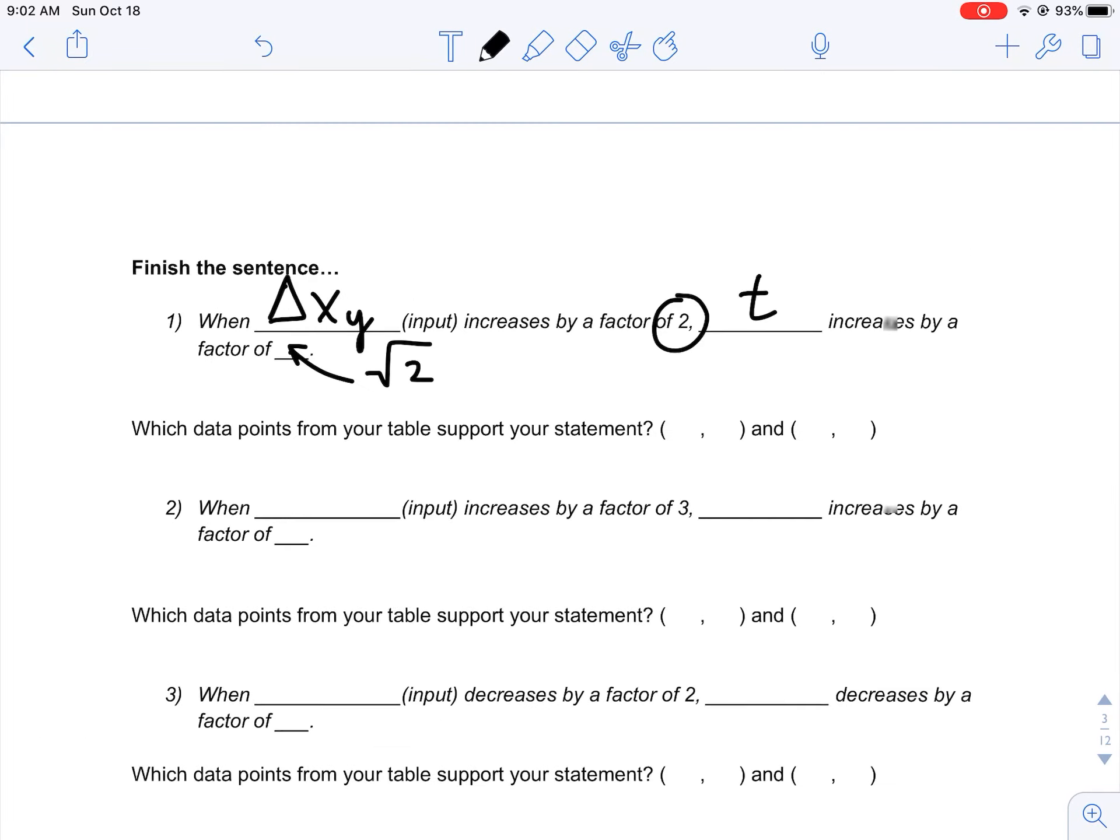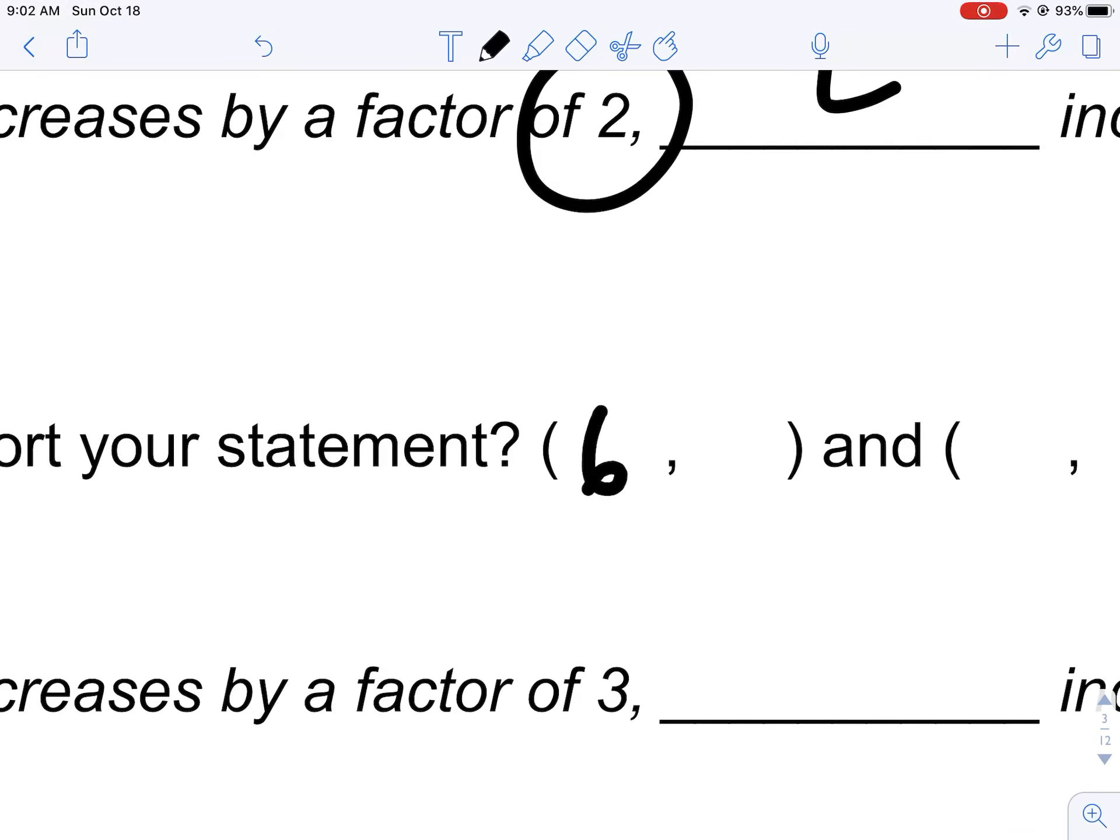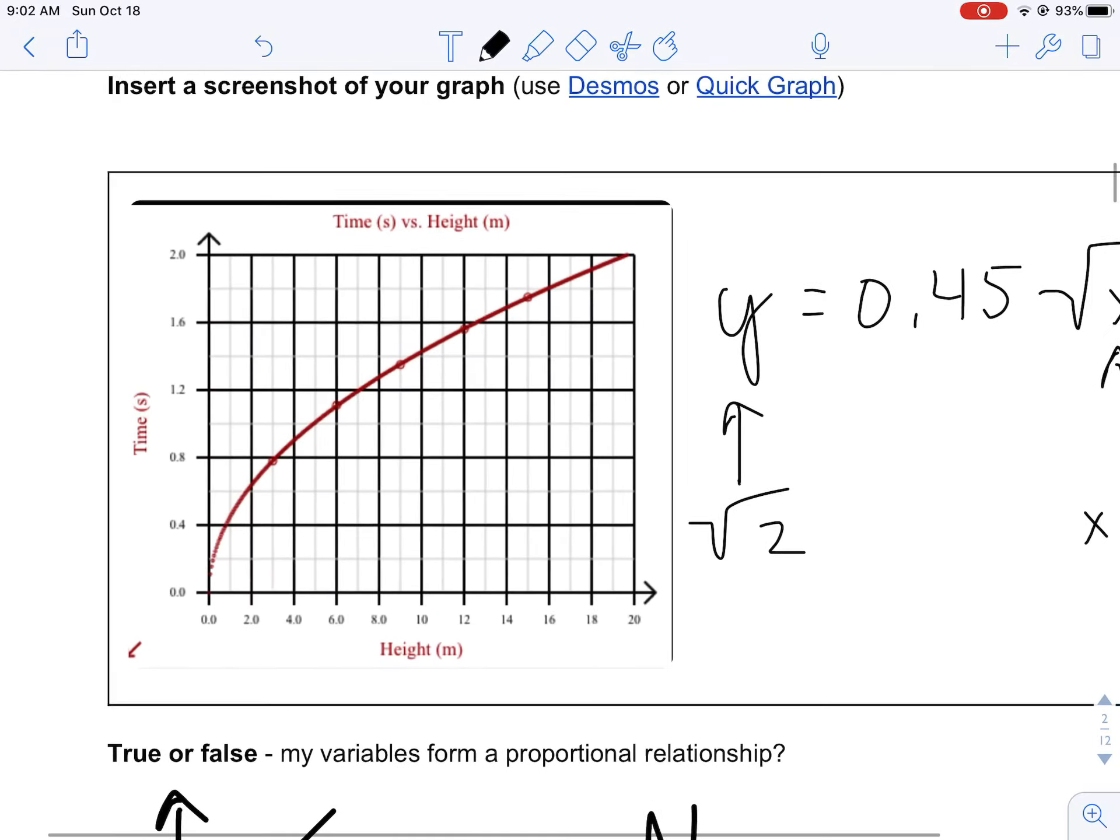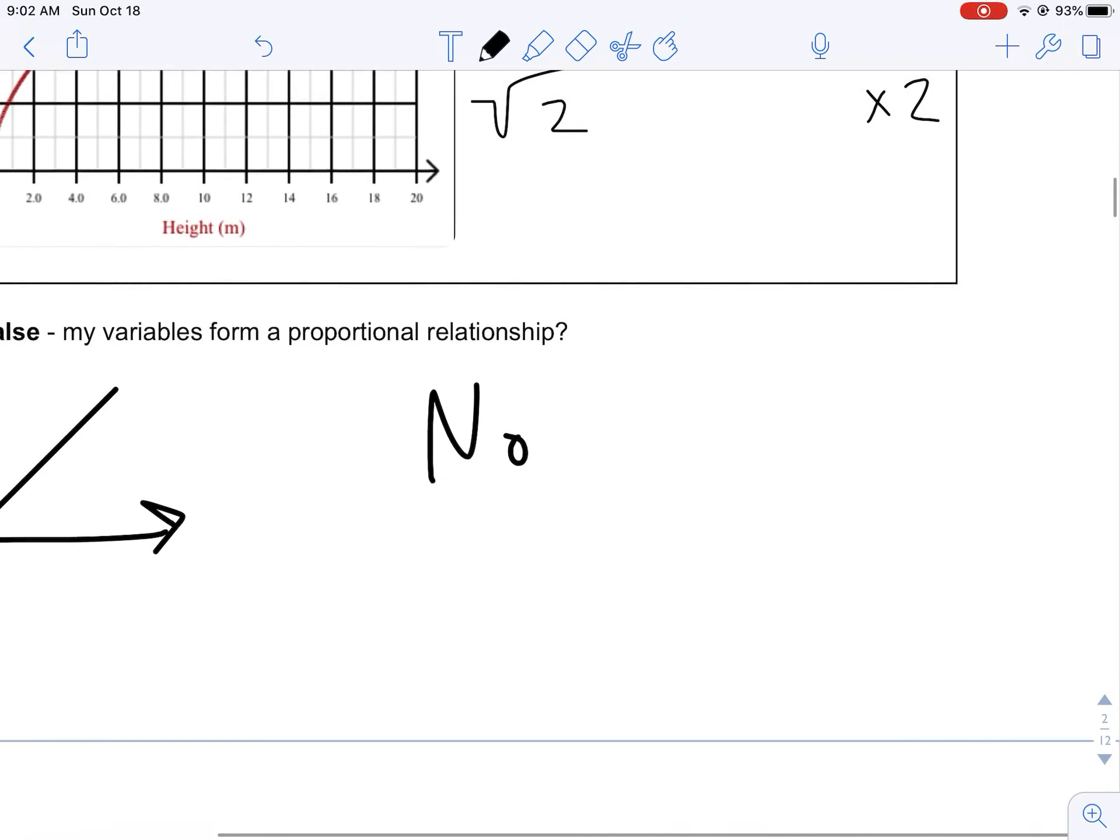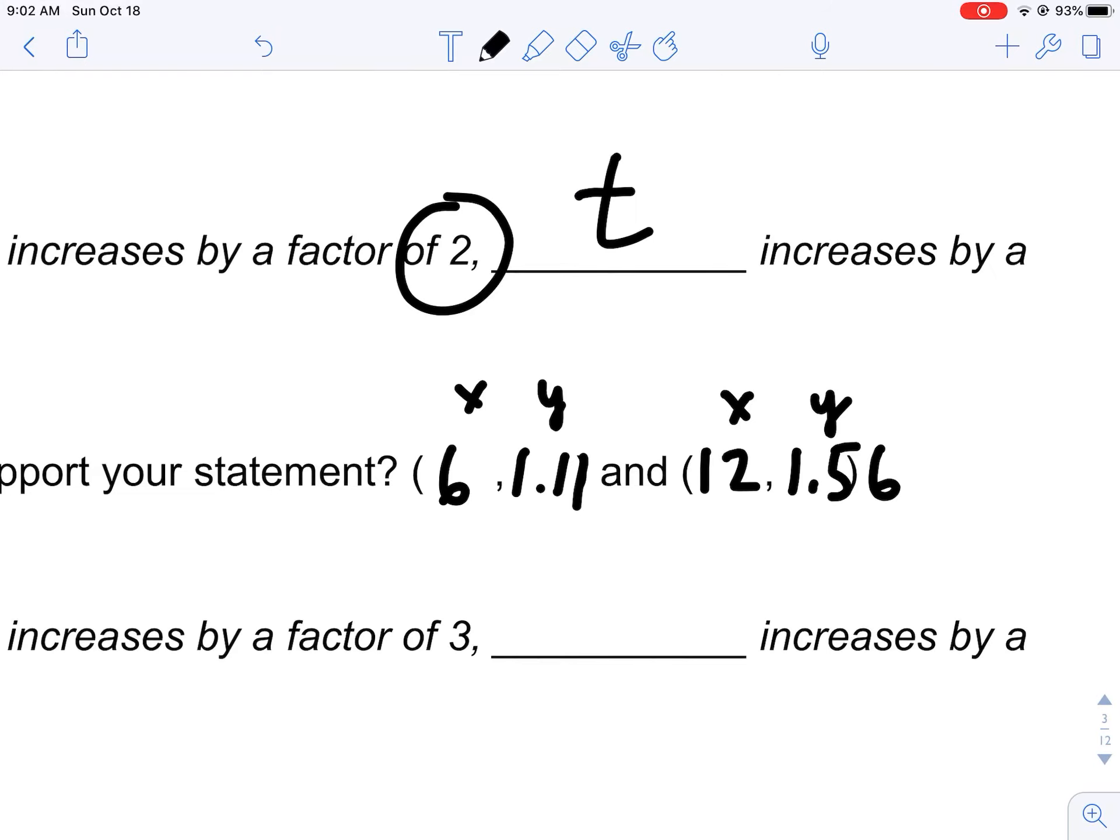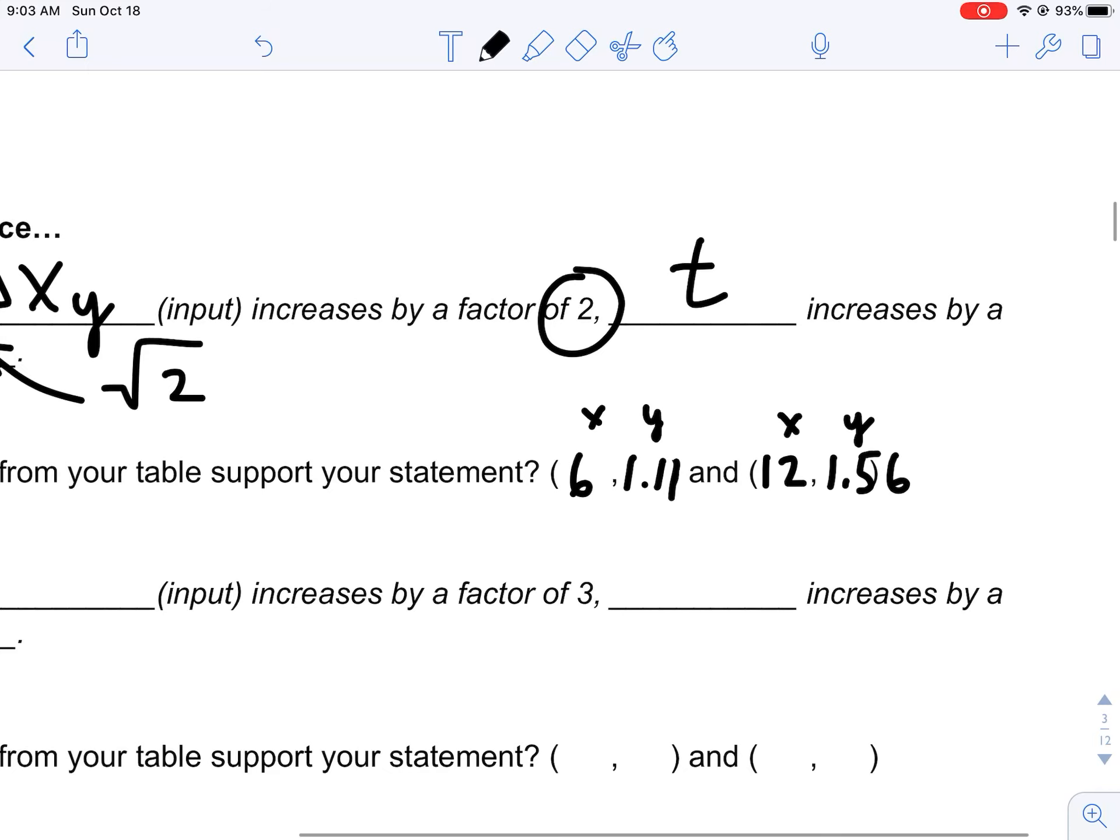What data points from the table support the statement? I can use any of the points I just talked about. I just did 6 and 12, and I think I had 1.11 and 1.56. Don't forget it's always x comma y, x comma y. So those are my two different data points that support that.